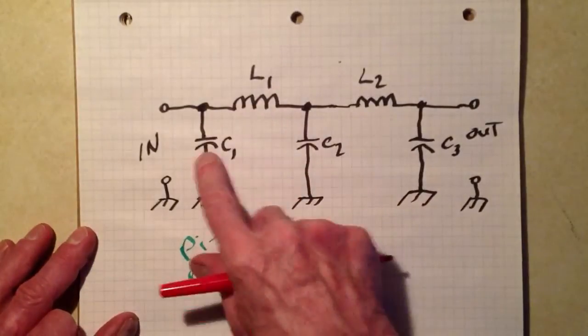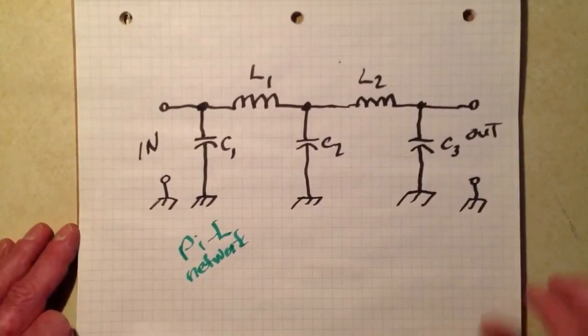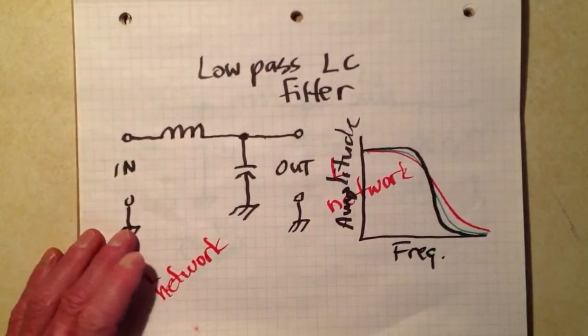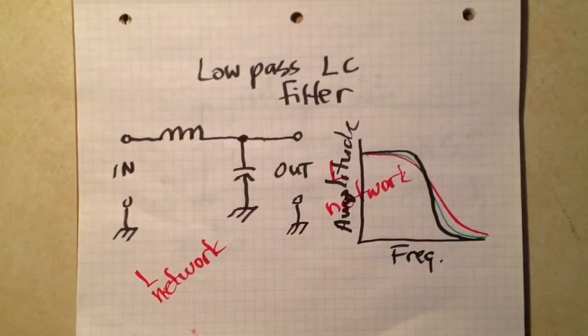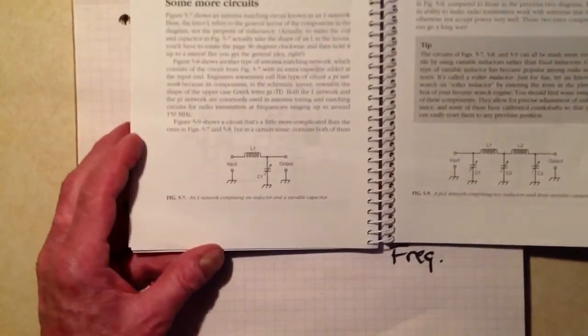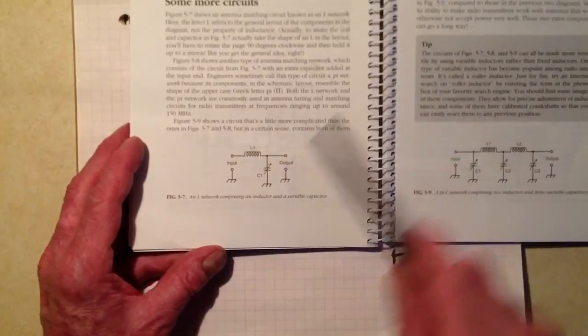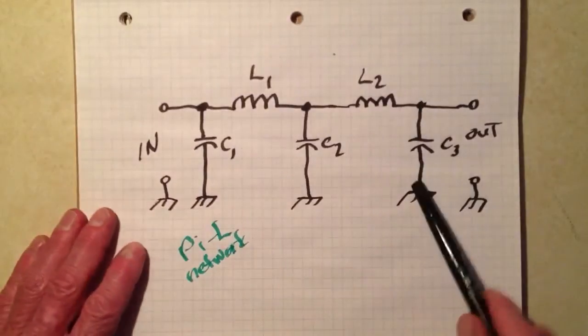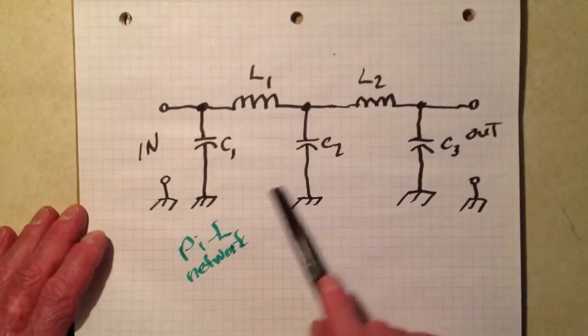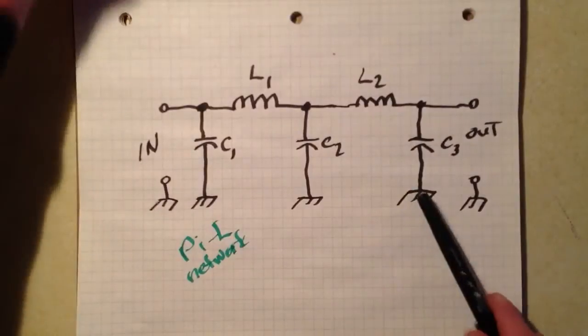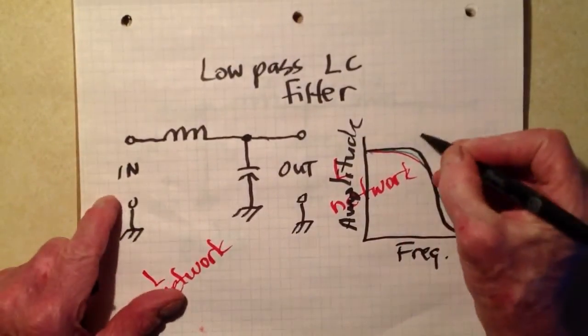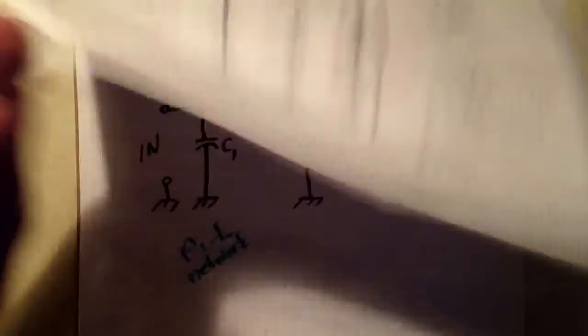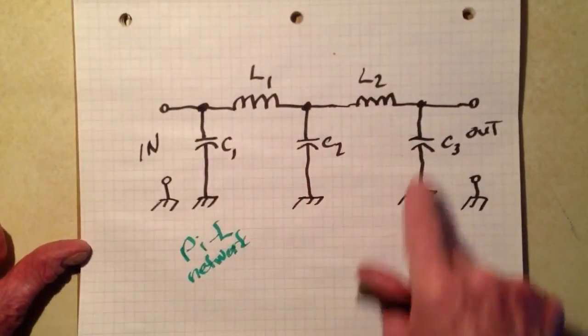And then I went further and talked about a pi network, finally a pi L network. I recommend you watch that video on low-pass LC filters. Notice these circuits have series-connected inductors and parallel-connected capacitors, which tend to discriminate against the higher frequencies and let the lower frequency signals pass. The exact cutoff frequency depends on the values of the inductors and the capacitors. All of the inductors have the same value. All of the capacitors have the same value.